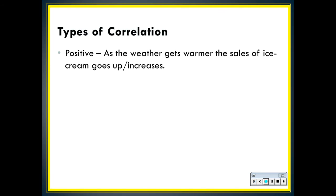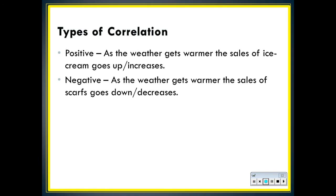So an example of positive correlation would be, as the weather gets warmer, the sales of ice cream increase. An example of negative correlation would be, as the weather gets warmer, the sales of scarves goes down. And no correlation would be the height of a person having no relationship with their exam marks.